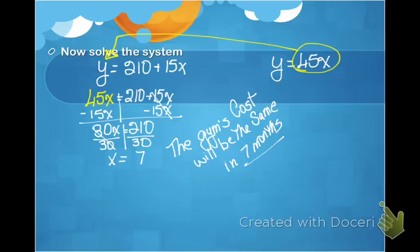Now, in this one, I took the 45x, which equaled y, and I substituted it into y for my other equation. So I basically set the two equations equal to each other and solved for x, the number of months. So in seven months, both of those gym memberships will cost the same.